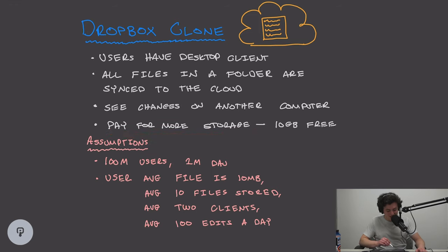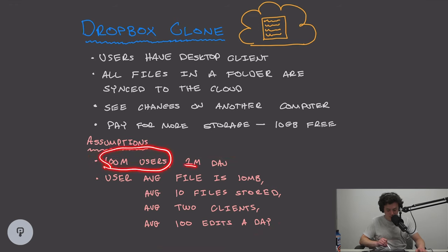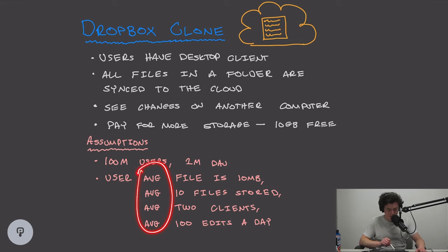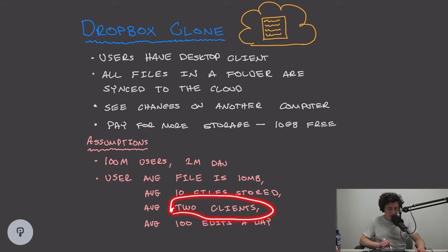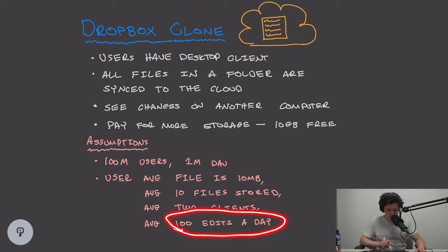Now that we understand the requirements, let's look at some assumptions we can make. An interviewer will typically provide stats like these. There are 100 million users on our service and 1 million of those are active daily — DAU means daily active users. On average, a user's file is 10 megabytes in size, the average user has 10 files stored, the average user has two clients, and there are 100 edits per day per user.